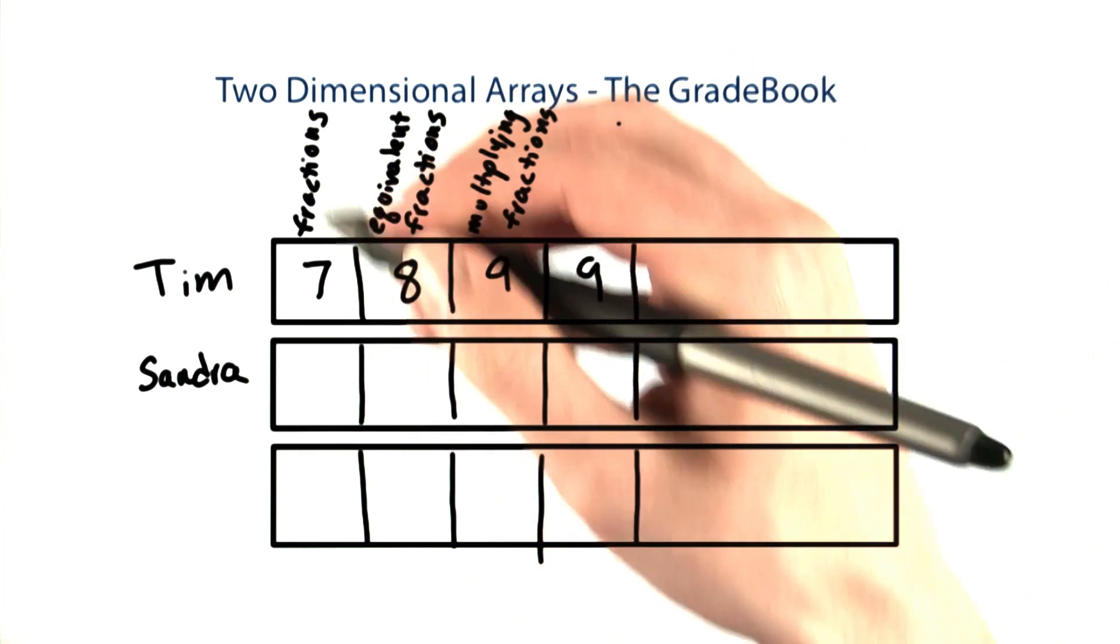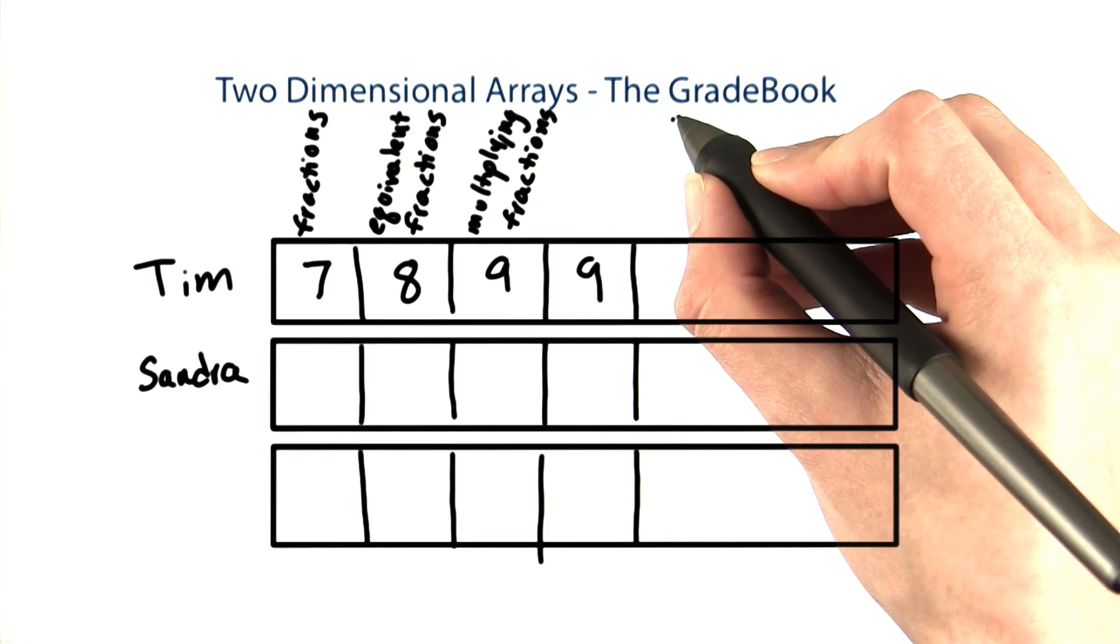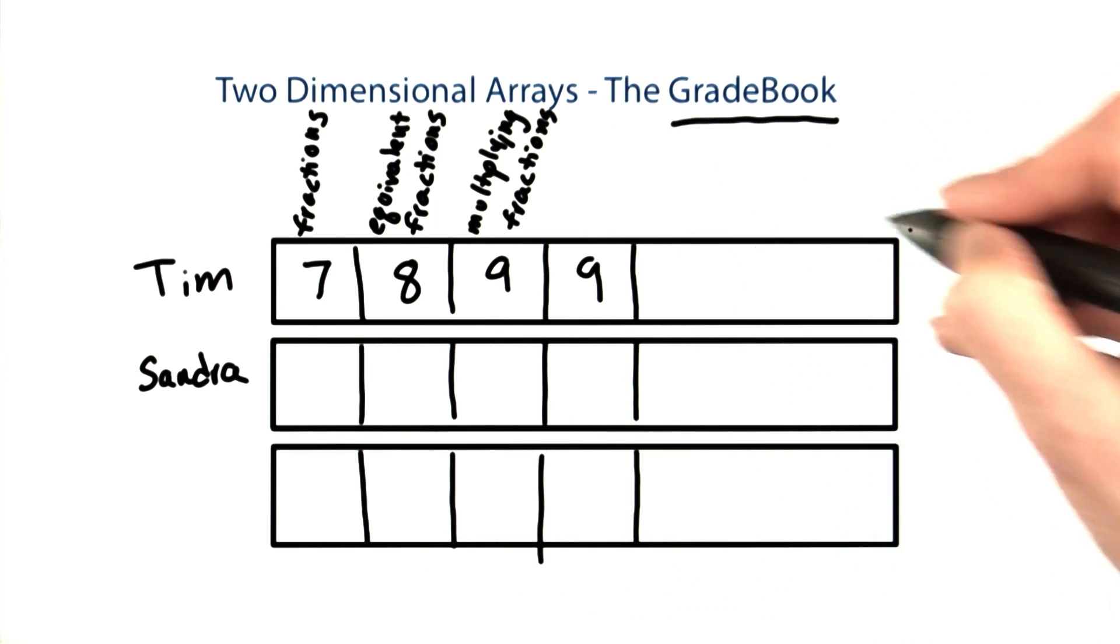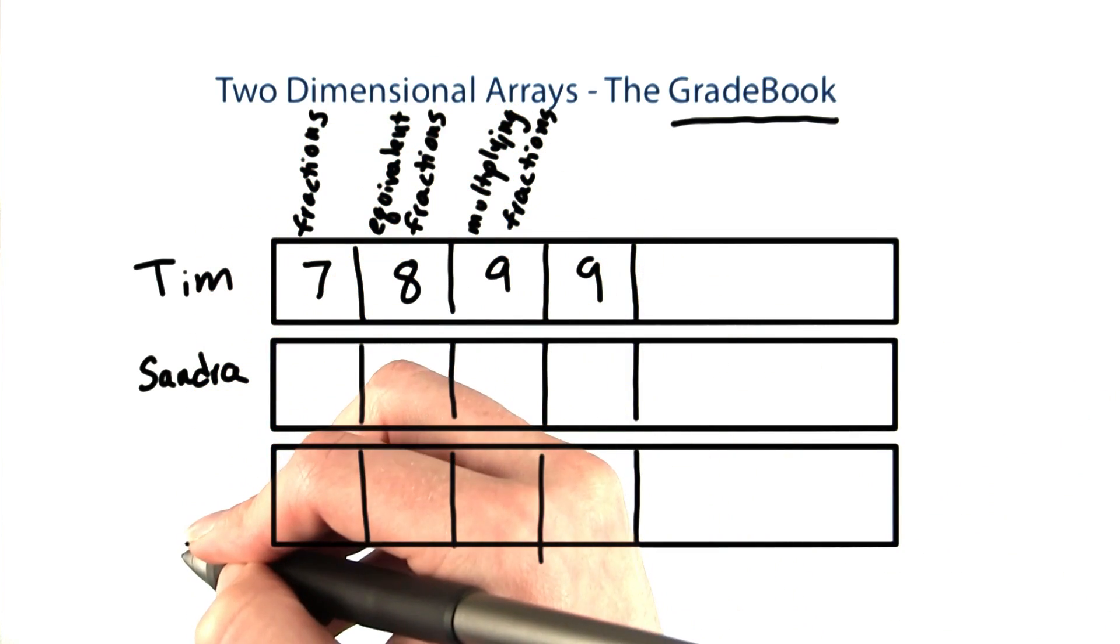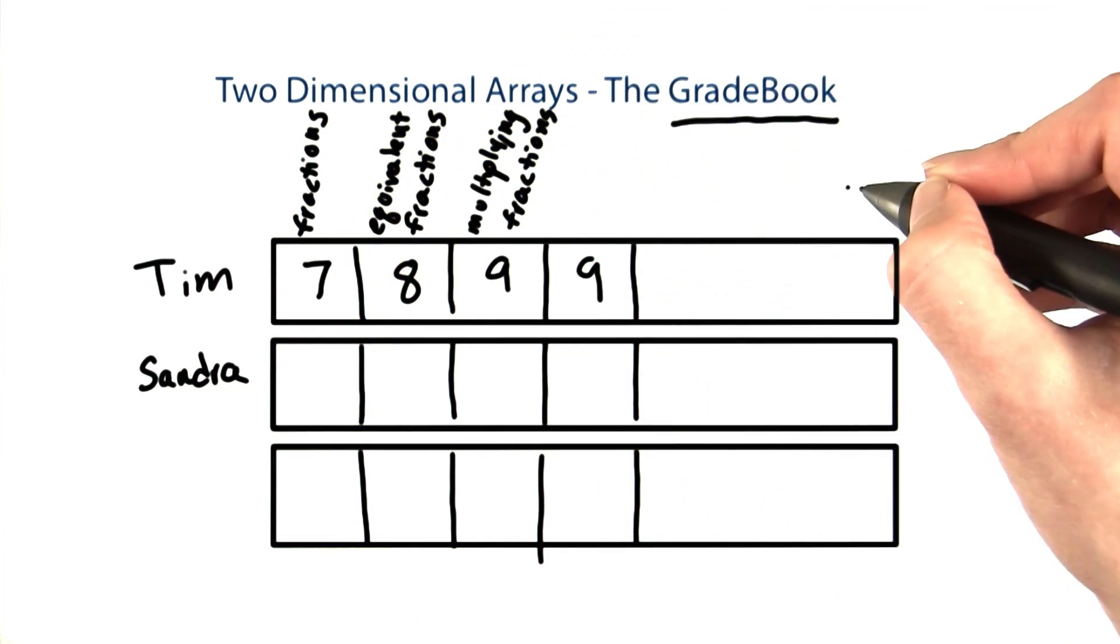We're going to implement this together. I'm going to make a class, the gradebook class, which will contain a 2D array of all of the scores. It'll also contain the names of the students and the names of the topics.